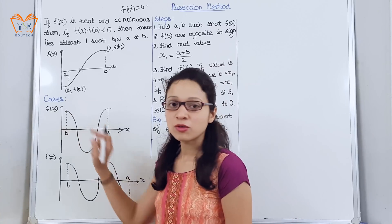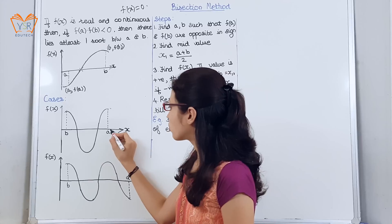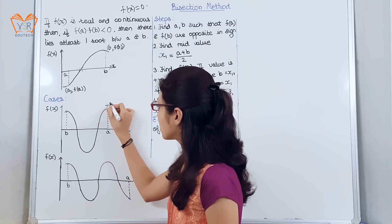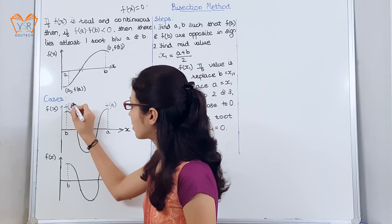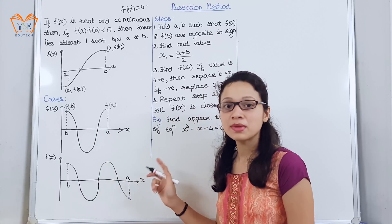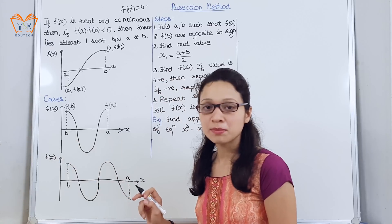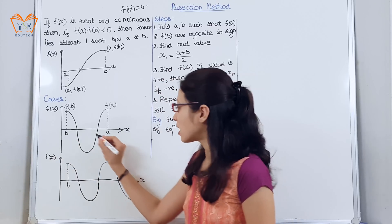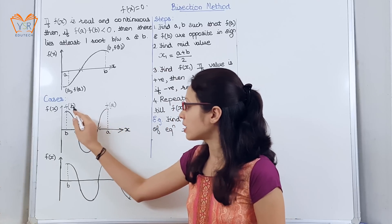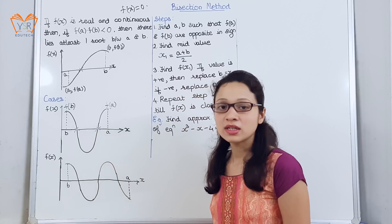We will see a few special cases. The first case says that if both f(a) and f(b) are positive, there may or may not lie a root between interval a and b. If a root lies, it will lie in a multiple of 2. So in an interval where f(a) and f(b) are both positive, two roots may lie between that interval.